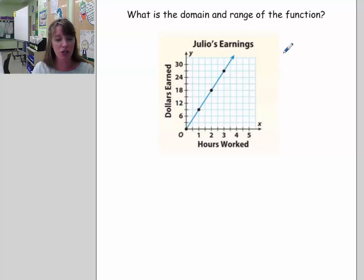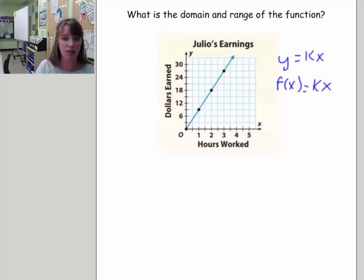The equations are of the form y is equal to kx. For us, we know this to be f(x) is equal to k times x, where k is the constant of proportionality. Remember, we're making that switch in terms of notation.